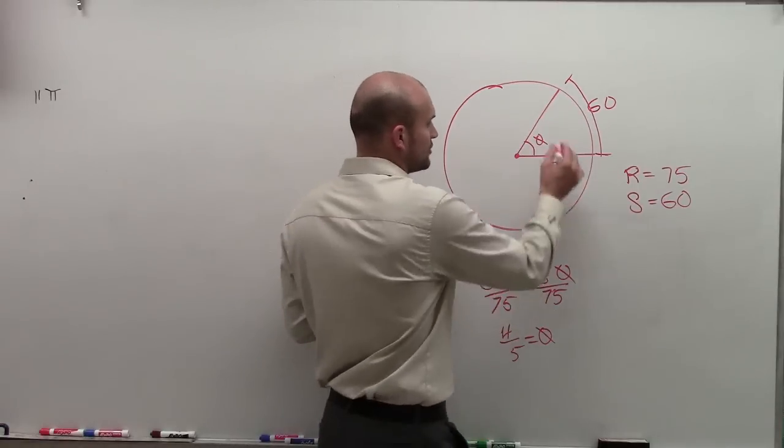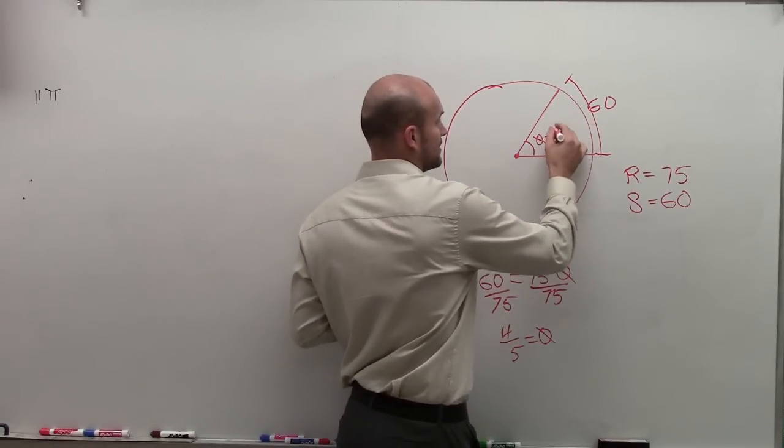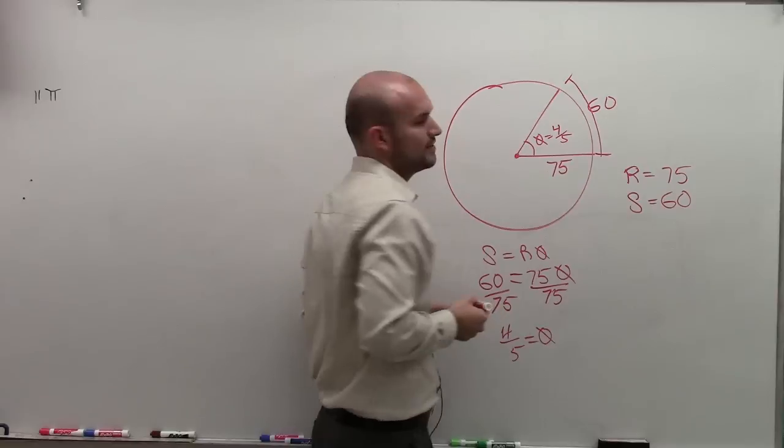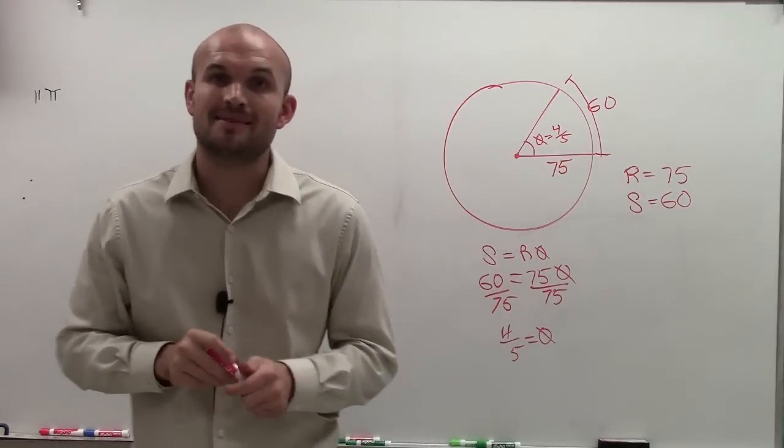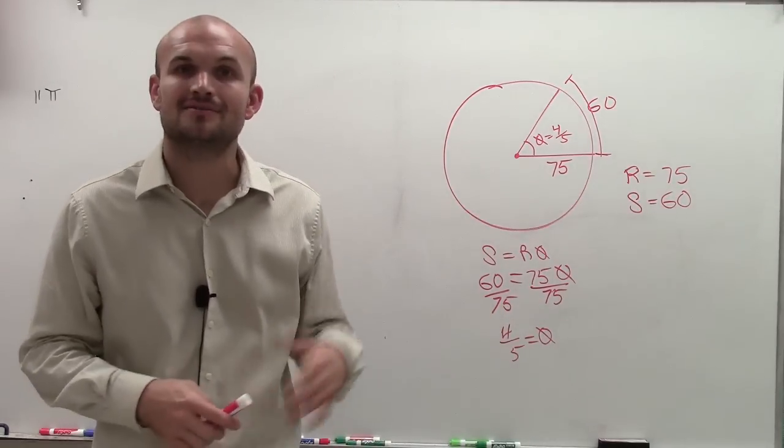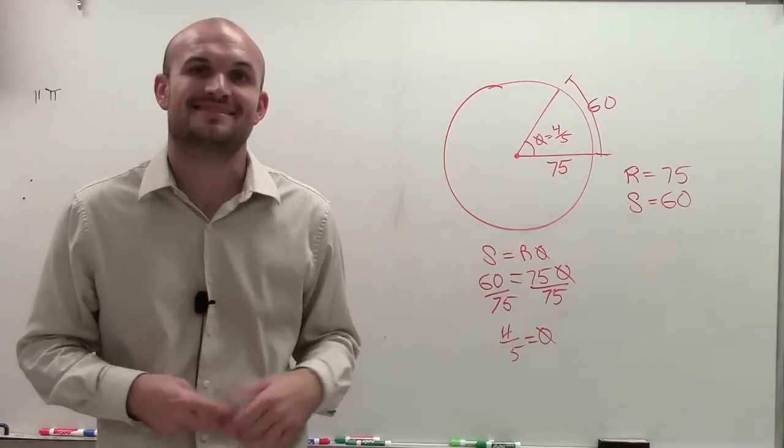That means the measure of this angle in radians is equal to 4/5. So there you go, ladies and gentlemen. That's how you find the central angle when given the arc length and the radius. Thanks.